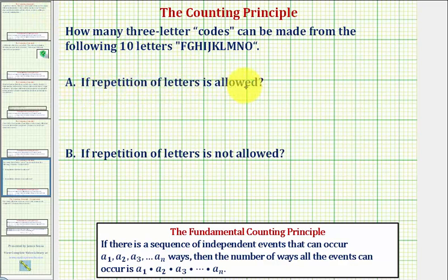So for part A, notice that repetition is allowed. So to model the three independent events, we'll use three horizontal bars.